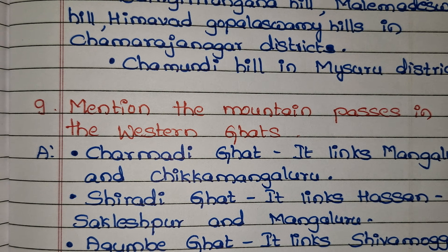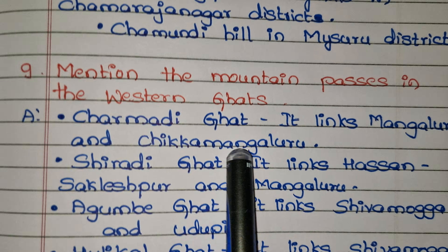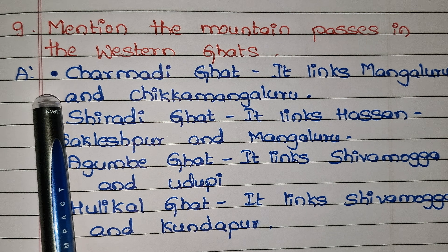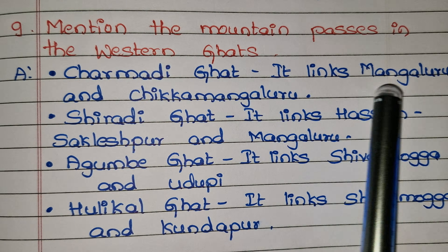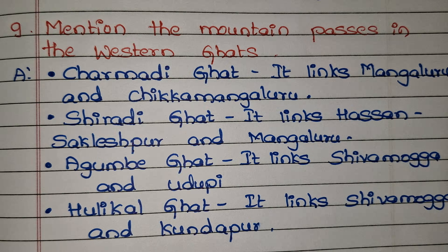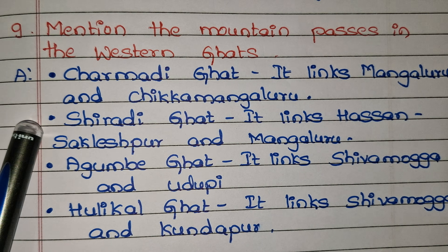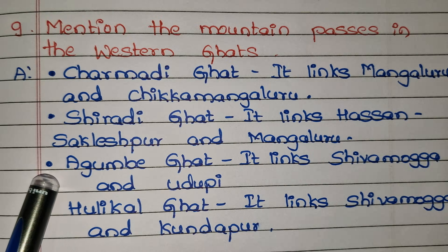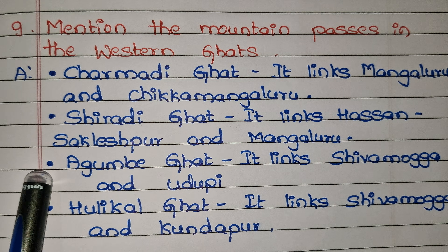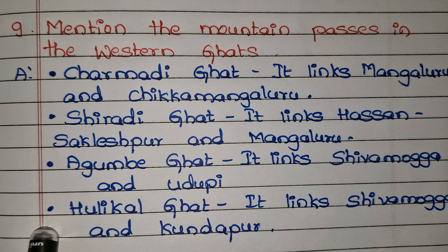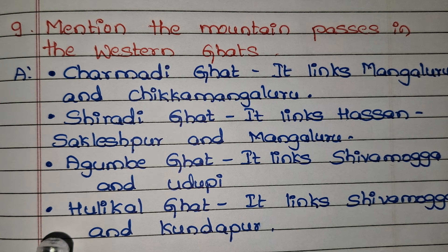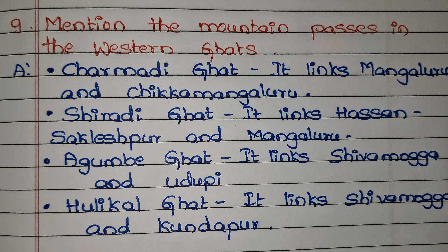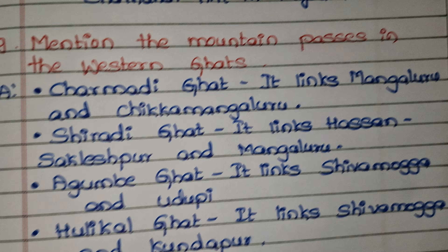Mention the mountain passes in the Western Ghats. The first is Charmadi Ghat, which links Mangaluru and Chikkamagaluru. The second is Shiradi Ghat, which links Hassan/Sakleshpur and Mangaluru. The third is Agumbe Ghat, which links Shivamogga and Udupi. The fourth is Hulikal Ghat, which links Shivamogga and Kundapura. These are all the mountain passes in the Western Ghats.